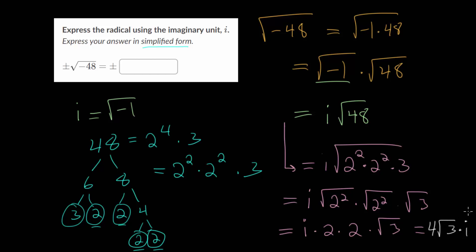Remember, it's important that you do not write the i underneath the square root. If you want, you can put a little mark there just to signify the end of the square root — only 3 is underneath it. So the answer, plus or minus the square root of minus 48, is plus or minus 4 root 3 multiplied by i.